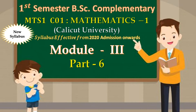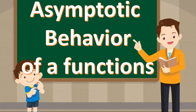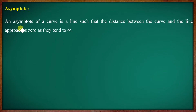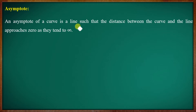Part 6 will discuss the topic: Asymptotic Behavior of a Function. This is one of the asymptotes. An asymptote of a curve is a line such that the distance between the curve and the line approaches 0 as they tend to infinity.